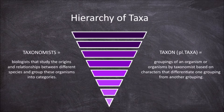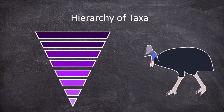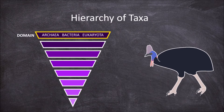To explain these different hierarchies, we will use the example of the southern cassowary. The largest taxon and grouping is the one that contains the largest grouping of organisms. This is the domain taxon, which consists of all living things. There are three domain taxa: archaea, bacteria, and eukaryota. The southern cassowary belongs to the domain eukaryota, along with all other organisms considered a eukaryote.